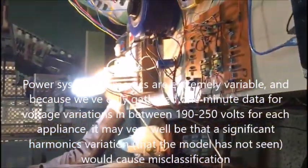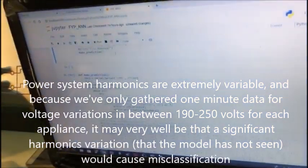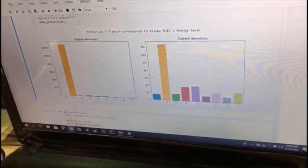Now we will try the energy saver plus the Edison bulb. So let's see what it says now. It says prediction seven, which is Edison bulb plus energy saver. That seems to be fine.